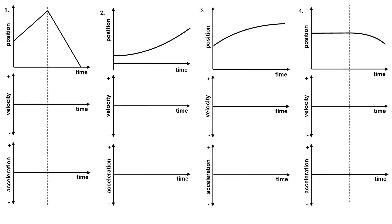Let's go ahead and match these graphs. For number one, in the first section of the motion, there is a positive slope and that slope is not changing. The straight line tells me the slope throughout this entire time is constant, which means I have a positive velocity, and that positive velocity is constant, so I would draw a flat line to indicate the velocity didn't change.